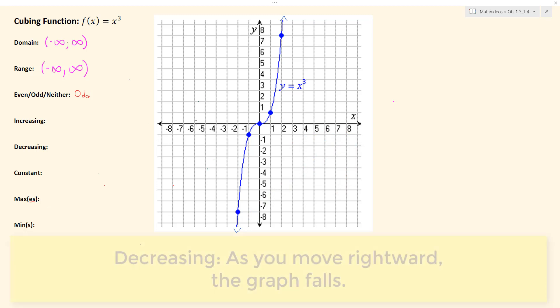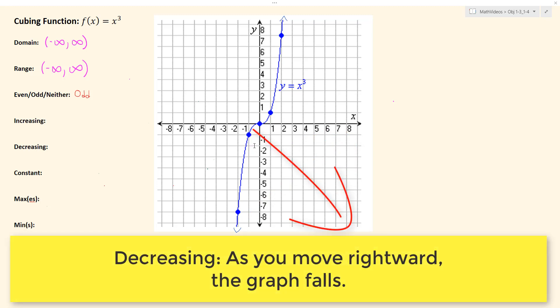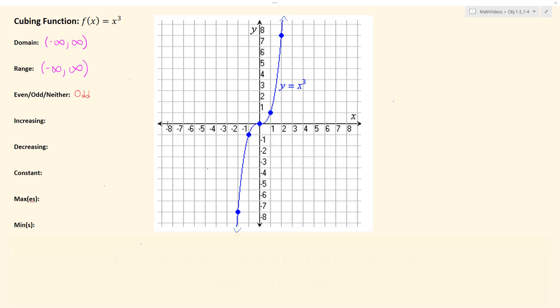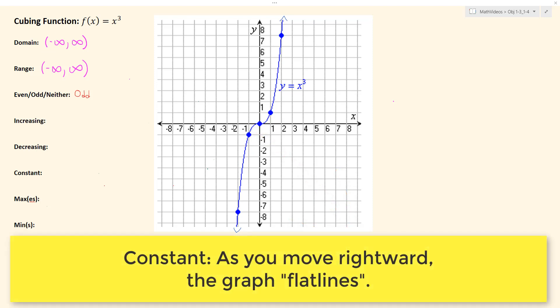If as we move rightward our graph falls, we would say that our graph is decreasing on that interval. And if as we move rightward our graph neither rises nor falls but rather flatlines, we would say that our graph is constant on that interval.